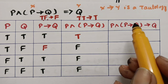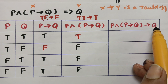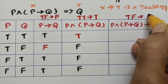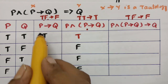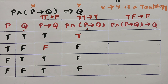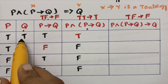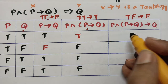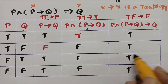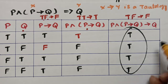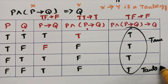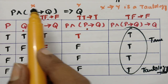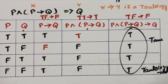Now check x implies y (i.e., p∧(p→q) implies q). For implication, if the first is true and the second is false, write false. Checking: is there any true-false pair? No true-false found anywhere. So all entries are true. Since the end statement is all true, this is a tautology, so x double implies y is confirmed.